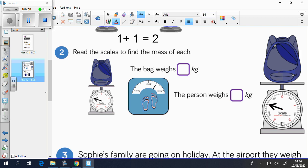So the bag weighs 4 kg. You can see that the red numbers are going up in 1. So you've got 0, 1, 2, 3. And then you can't really see it, but it is 4. So the bag weighs 4 kg. And then the person, so you can see from 40, between 45 you've got 5. So you've got 41, 42, 43, 44, 45, 46, 47. So the person weighs 47 kg.